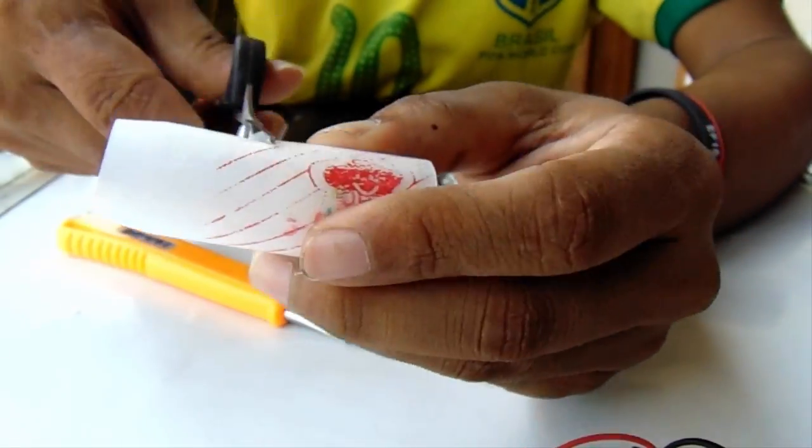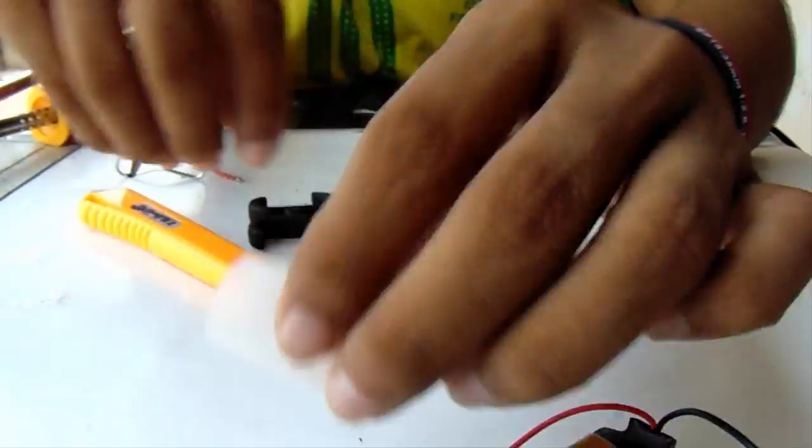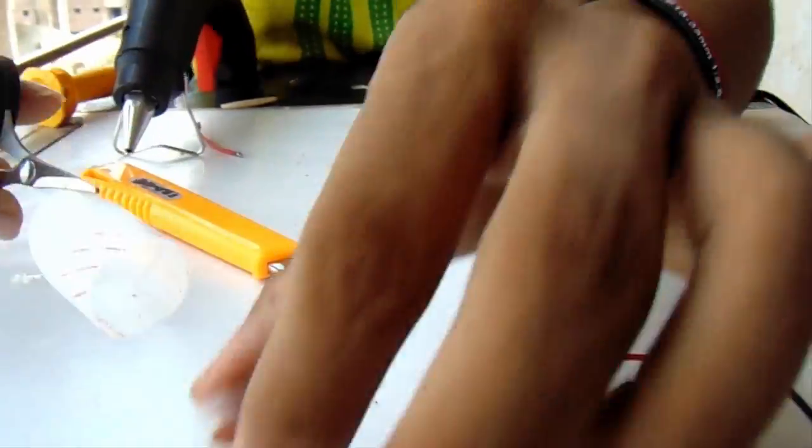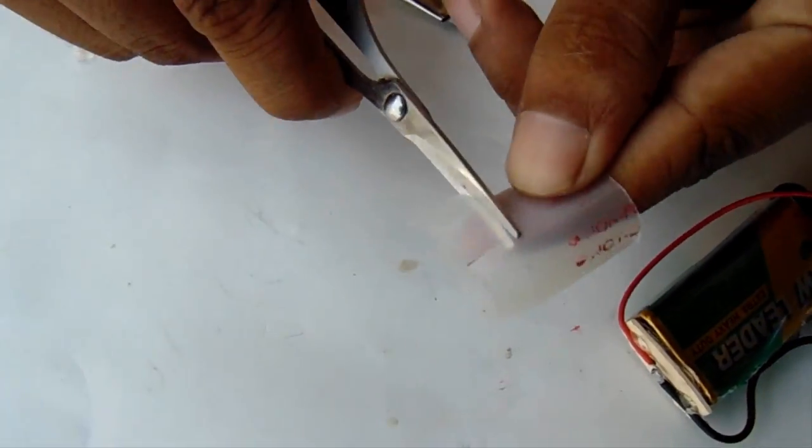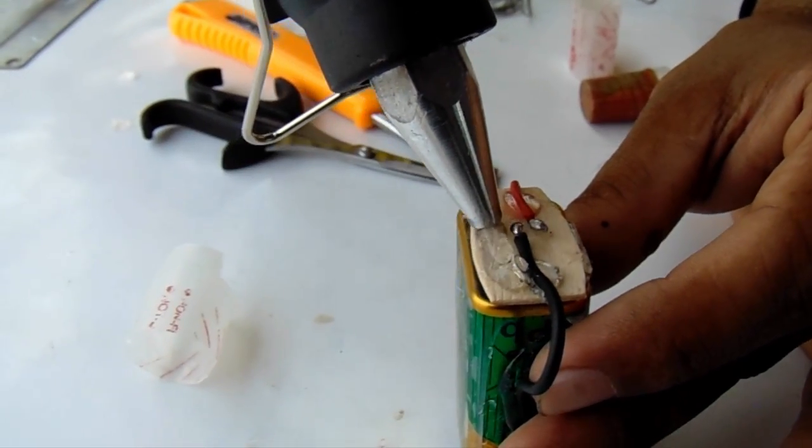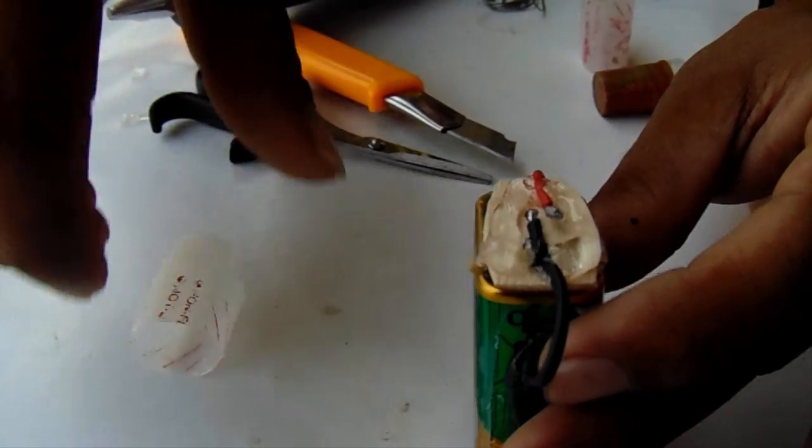Now cut down the plastic bottle to be the structure. Place down the plastic bottle on the previously created structure, that is on the battery.